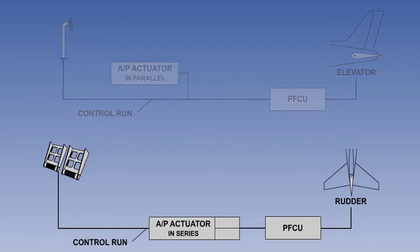If the servo motor is connected in series with the pilot's control and the control surface, then when the autopilot is engaged, the command from the autopilot's servo will cause the control surface to move.